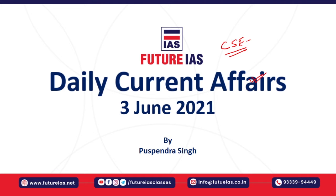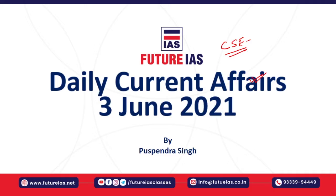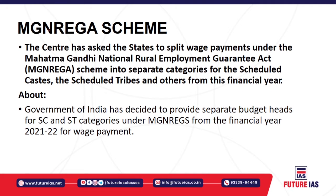The first news is about MGNREGA. MGNREGA means Mahatma Gandhi National Rural Employment Guarantee Act 2005, which was passed by the Parliament of India. The main purpose of passing MGNREGA is to provide the right to work, which is also a socialistic principle.